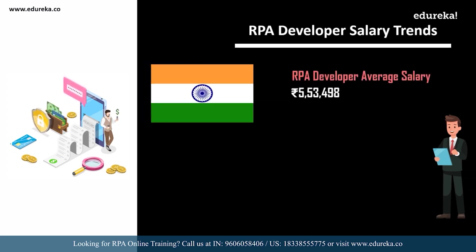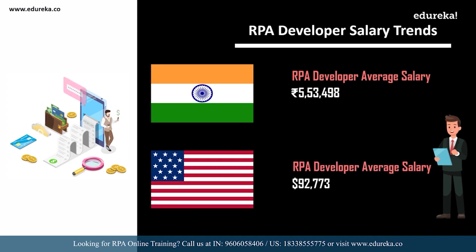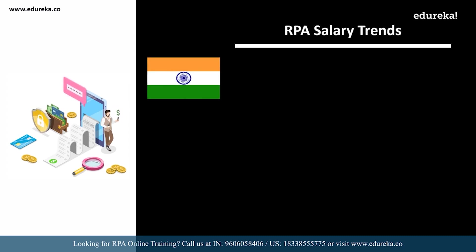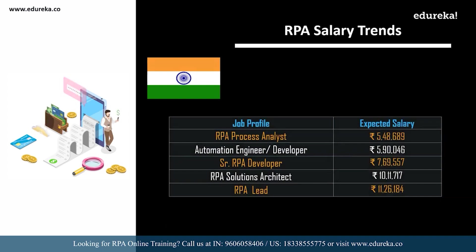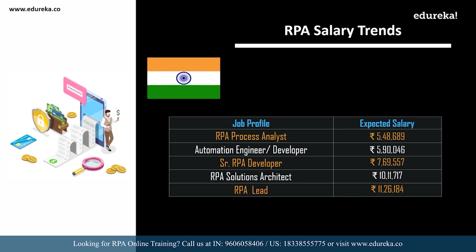According to Indeed.com, on average an RPA developer in India can expect a salary of five lakhs fifty-three thousand rupees per annum. Looking at other related roles in India: an RPA process analyst can expect around five lakhs forty-eight thousand; an automation engineer or automation developer around five lakhs ninety thousand; a senior RPA developer around seven lakhs sixty-nine thousand; an RPA solutions architect around ten lakhs eleven thousand; and an RPA lead can expect around eleven lakhs twenty-six thousand per annum.